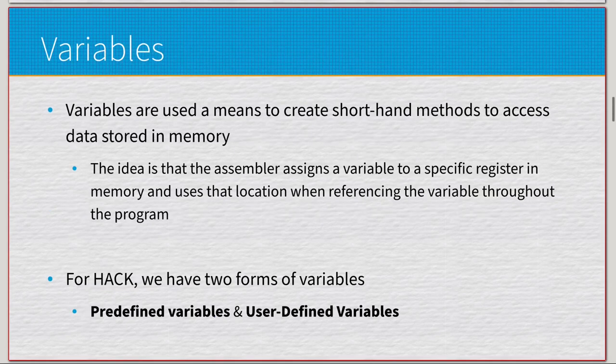So we're going to have two forms of symbols. That's going to be variables and labels. Very similar, but they serve two very different purposes. Let's talk about variables first. Used as a means to create shorthand methods to access particular data stored in memory. So it's going to be associated with something in RAM. The idea is to assign a variable to a specific register in memory and use that location when referencing the variable throughout the program. So for our particular assembly language, we're going to have two different forms. One's going to be predefined and one's going to be user defined.